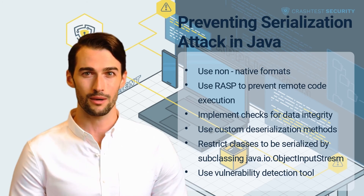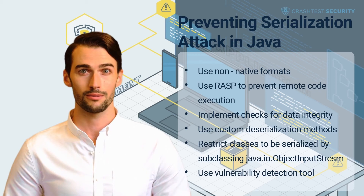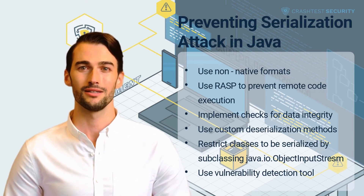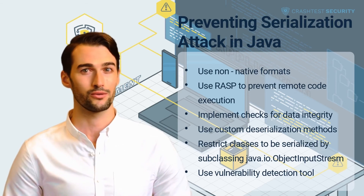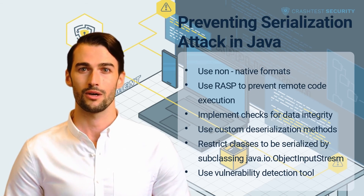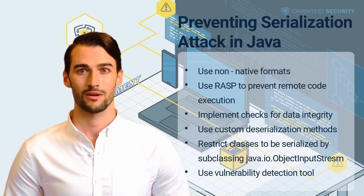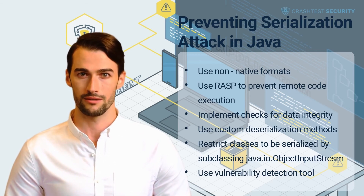Use RASP to prevent remote code execution: Runtime application self-protection tools are deployed into application servers to intercept all communications between the host and client machines and detect attacks in real-time. These tools monitor data flows, systems, and user behavior to detect malicious activity, and also identify patterns in data structures and serializable objects to build context for regular user and application behavior. Any out-of-context data input is considered a potential threat. RASP tools can be configured to alert teams of attack attempts in diagnostic mode or mitigate the attacks in protection mode.